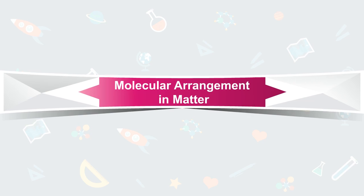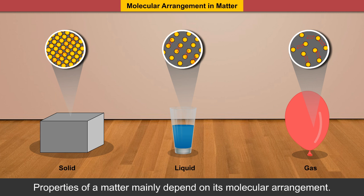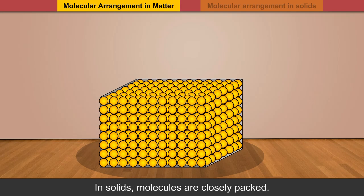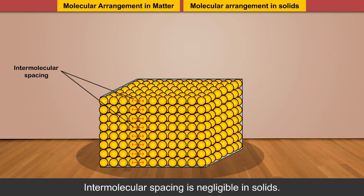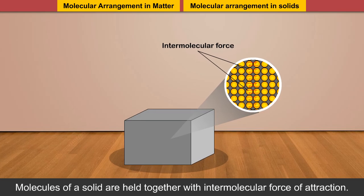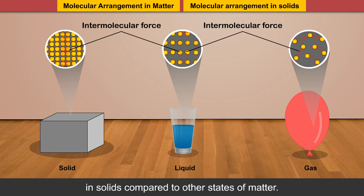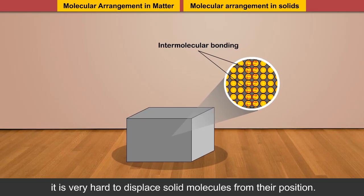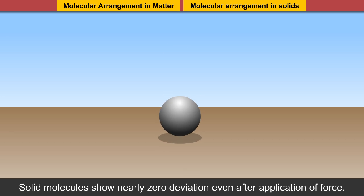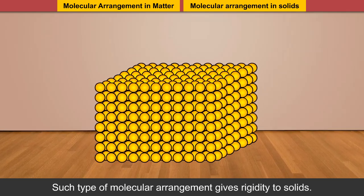Properties of all the three states of matter differ from each other in every aspect. Properties of matter mainly depend on its molecular arrangement. In solids, molecules are closely packed. Intermolecular spacing is negligible in solids. Molecules of solids are held together with intermolecular force of attraction. Magnitude of intermolecular force is greater in solids compared to other states of matter. Due to strong intermolecular bonding, it is very hard to displace solid molecules from their position. Solid molecules show nearly zero deviation even after application of force. Such type of molecular arrangement gives rigidity to solids.